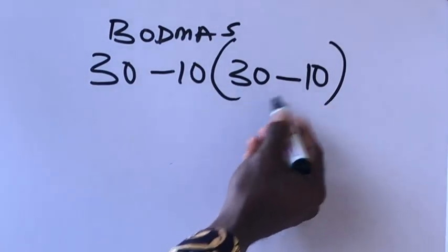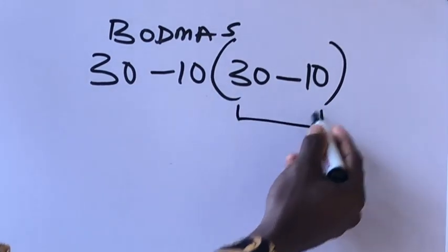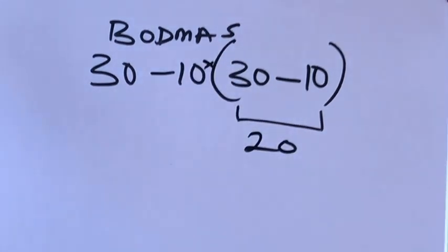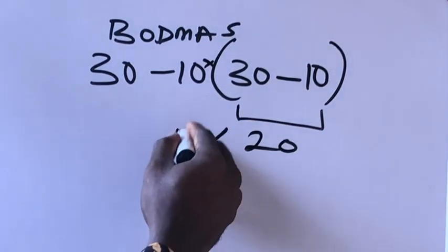So 30 minus 10 will give us 20. Remember there's an invisible multiplication here times 10.